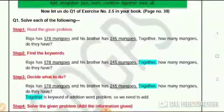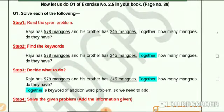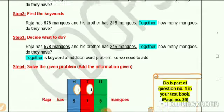Now do part A and B of question number 1, exercise number 2.5, page number 39 in your book, in the same manner as part A of question 1 is shown here.